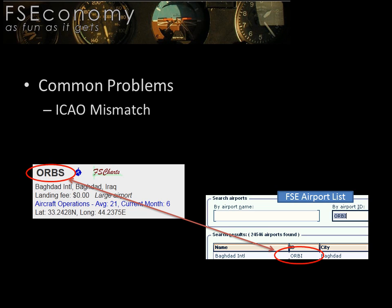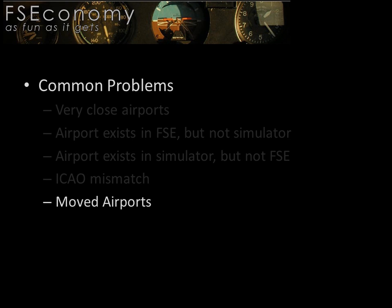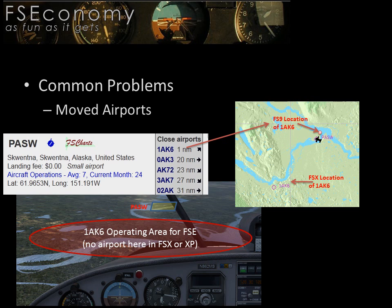The final problem we will discuss is airports that were incorrectly placed in the FSE database but fixed for FSX. X-Plane users will also see this problem when trying to operate from the incorrectly placed airport. One frequently cited example is the Tlaiku-Litna River Airstrip, 1AK-6, near PASW in FSE. This airport was incorrectly placed just a mile to the northeast of PASW, when in reality it is located about 10 miles southwest. Because the geographical coordinates in the FSE database place 1AK-6 northeast of PASW, if you attempt to land at Tlaiku-Litna in your simulator, FSE will place you at PASW. Instead, you must operate from the river or in the woods to the north and northwest of PASW.